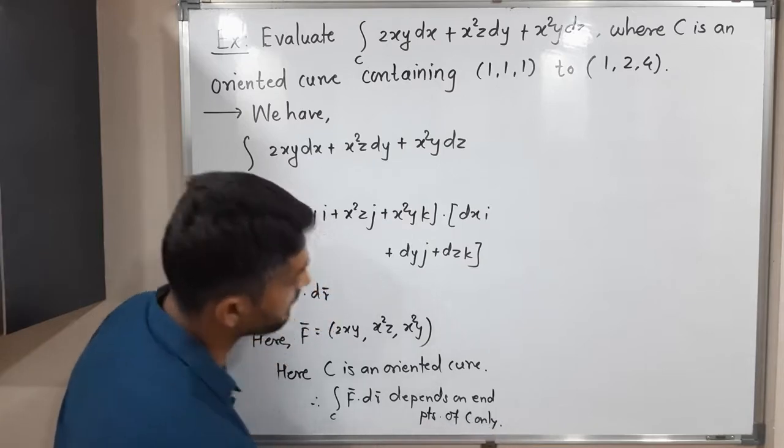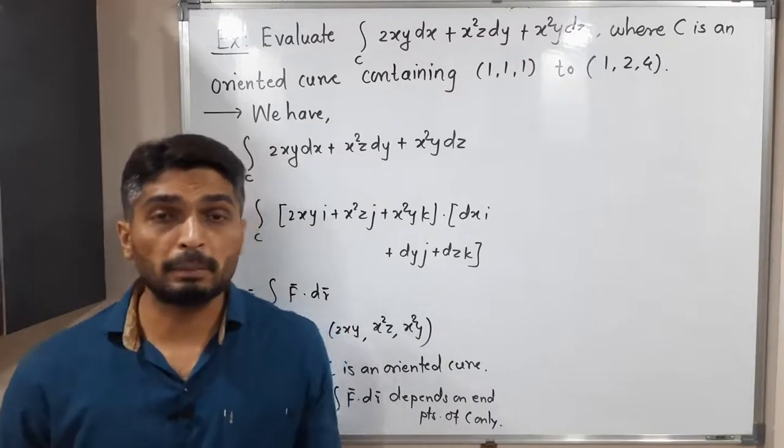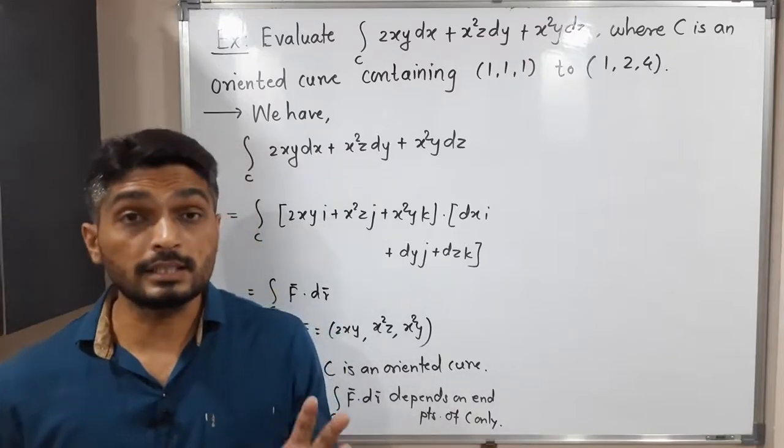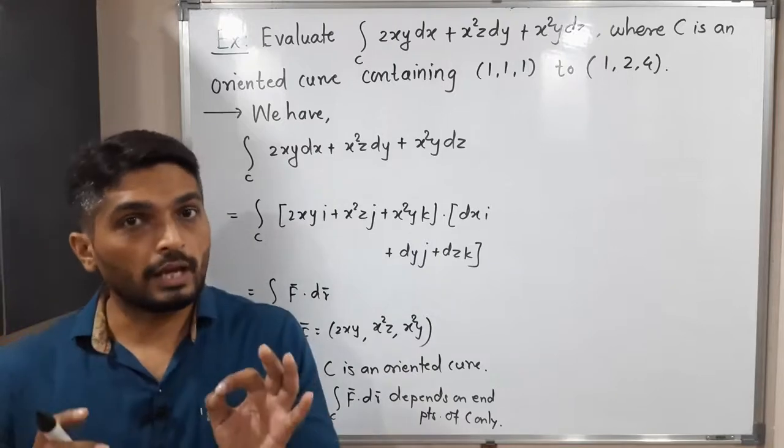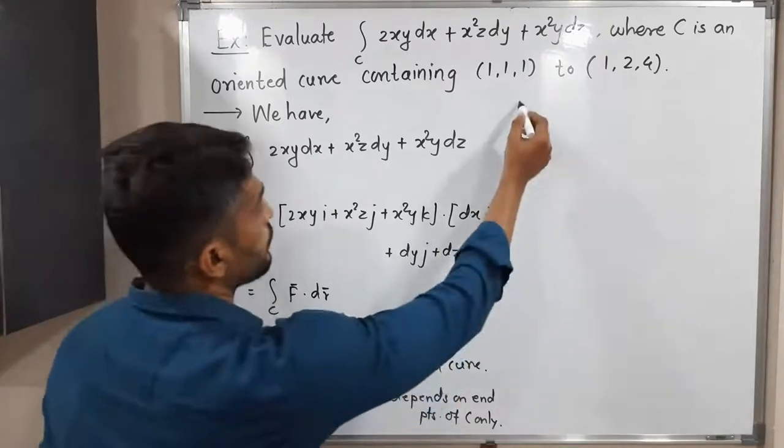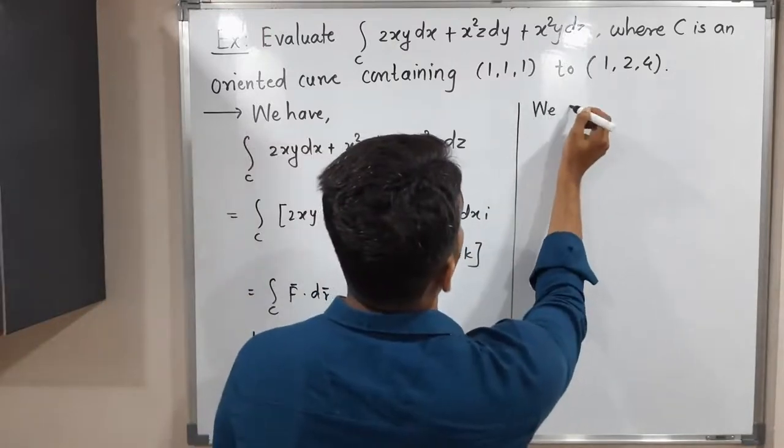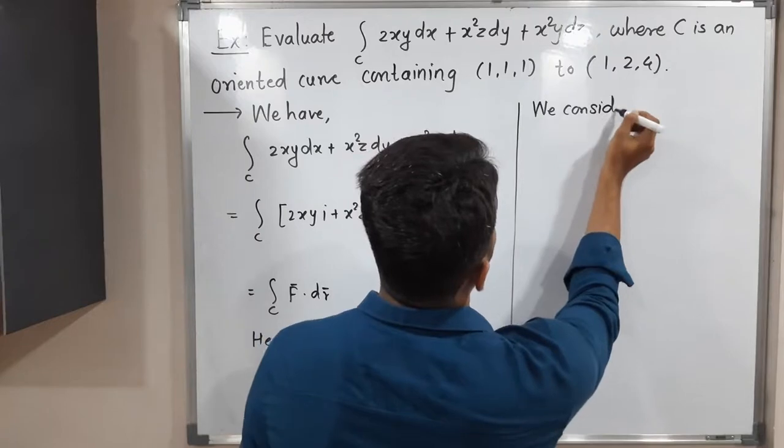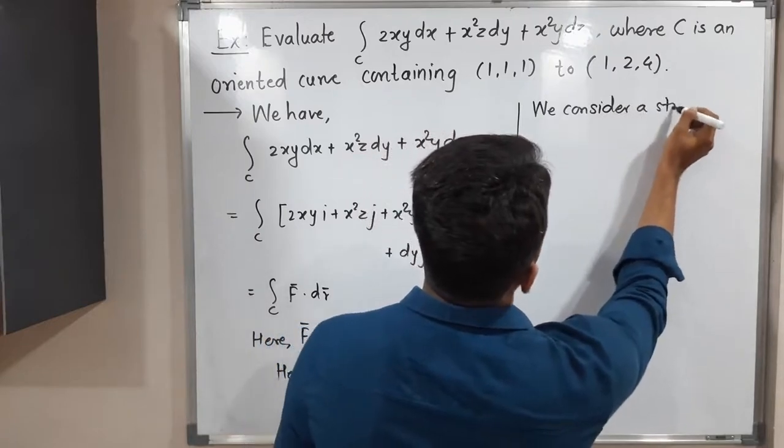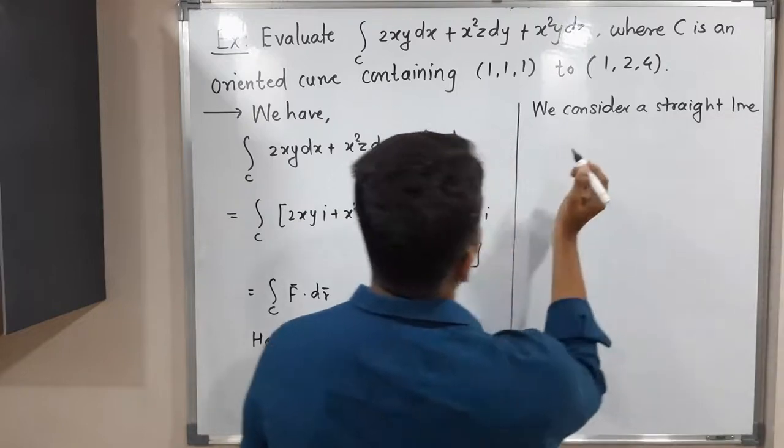So that means it does not depend on the curve. It can be a parabola, can be a straight line, can be part of a circle, anything what you can take. Since the value of integral depends on end points only, so let us take a straight line. So let us consider a straight line. So we consider a straight line here.